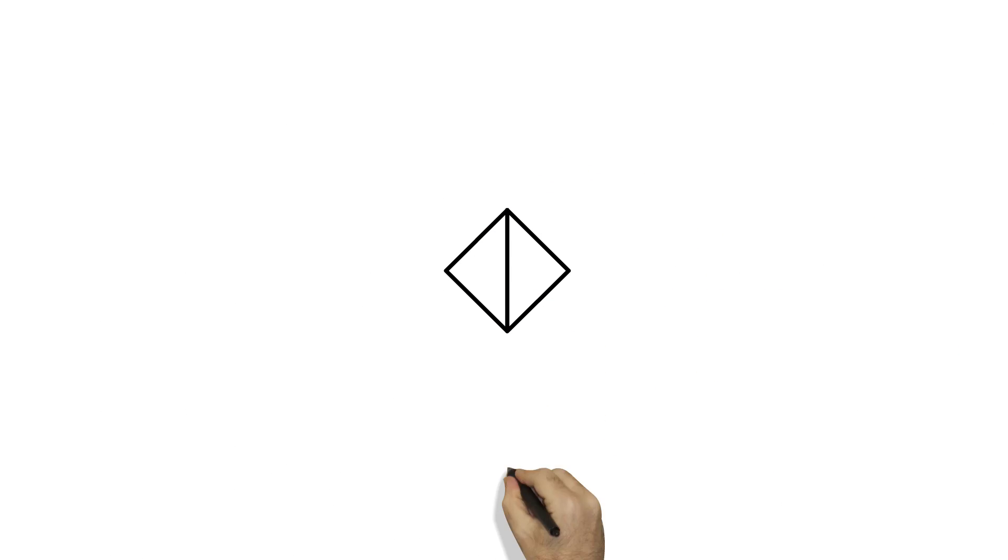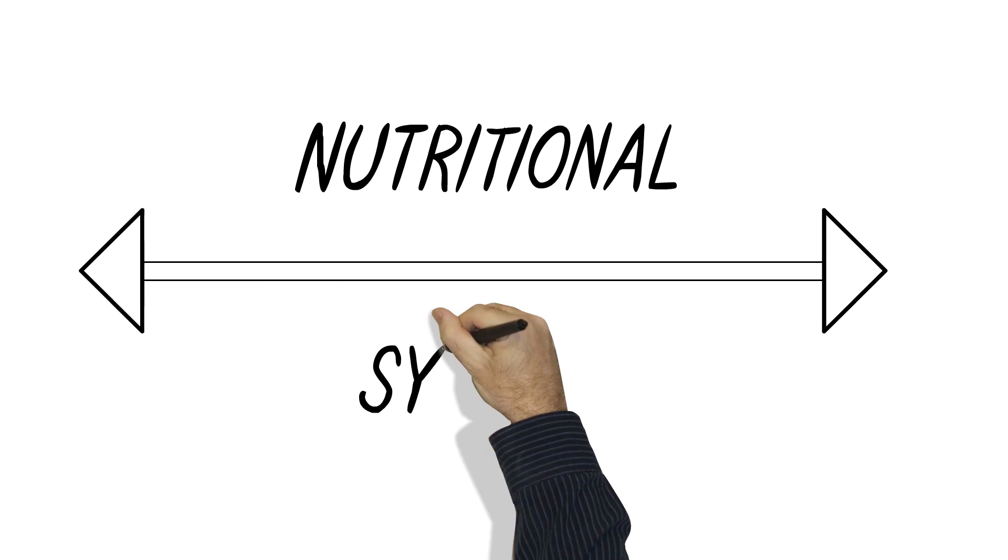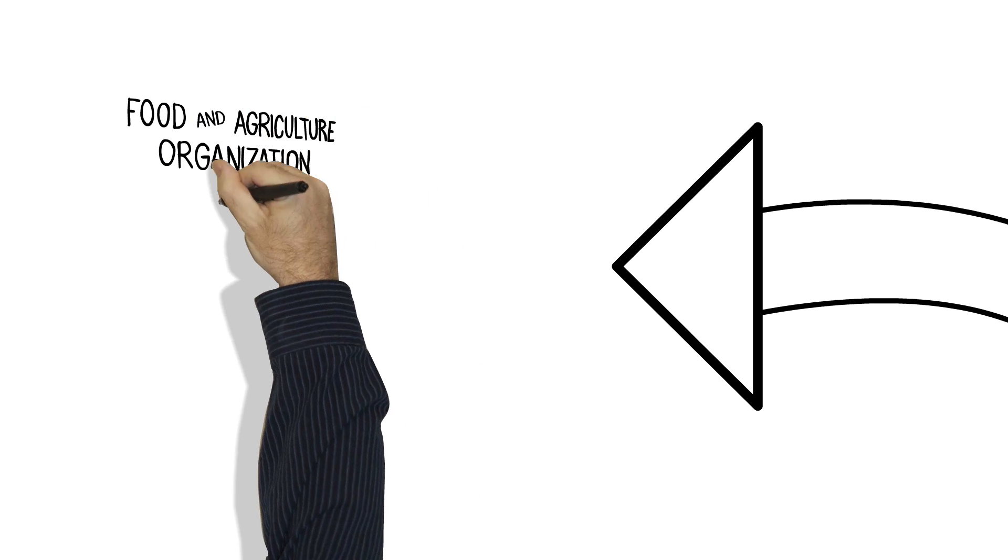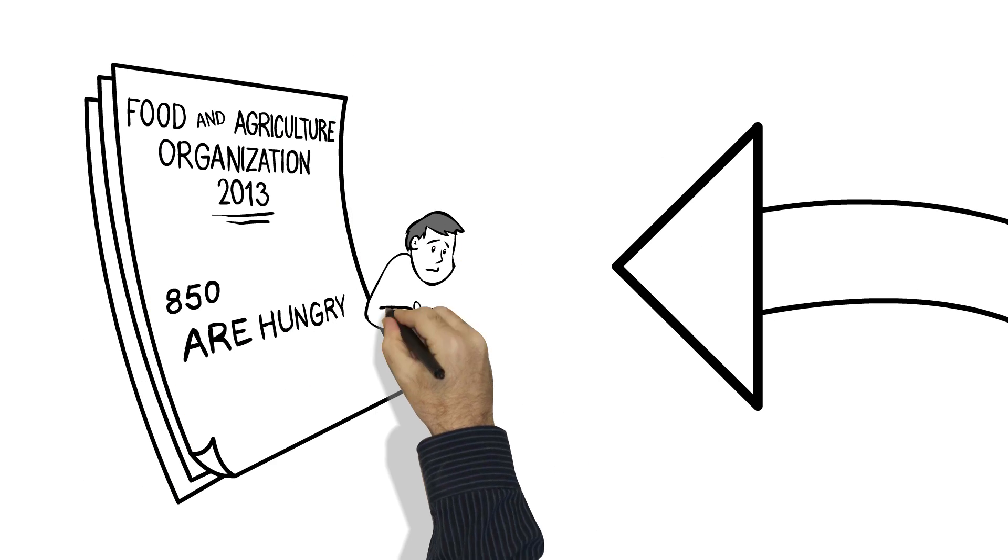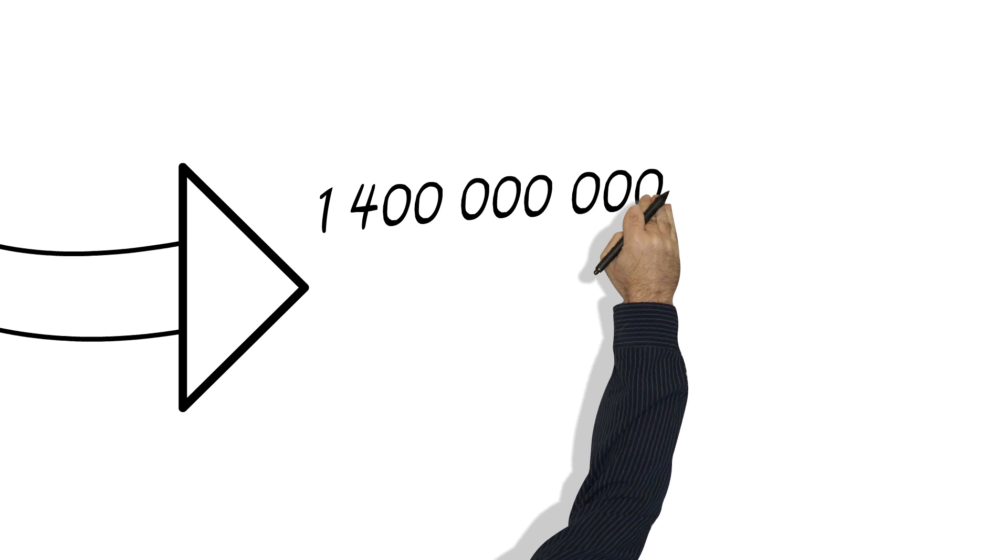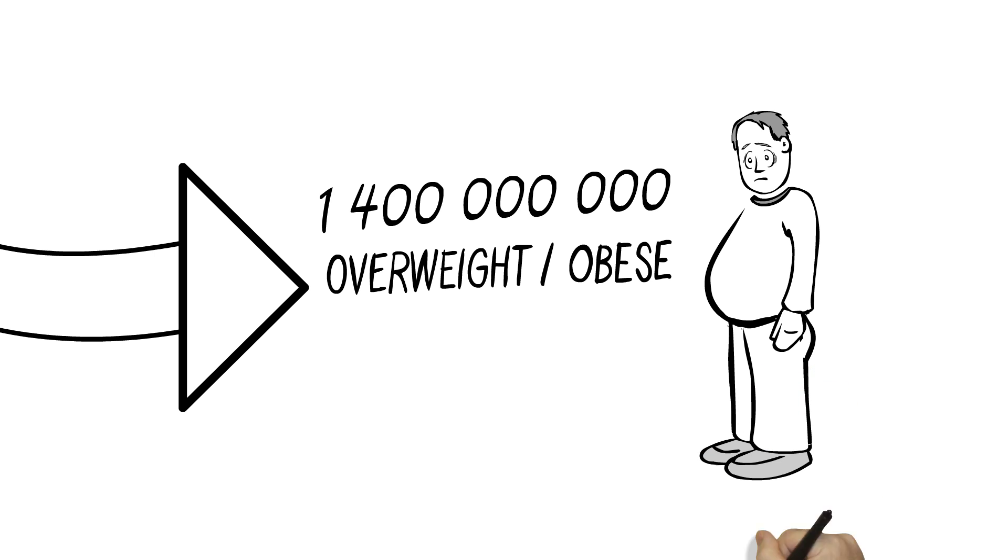So, let's step back for a second. I think it's pretty clear our current nutritional system is broken at both ends of the continuum. The Food and Agriculture Organization's 2013 count revealed that approximately 850 million people are hungry, and at the other end of the continuum, 1.4 billion are overweight or obese.